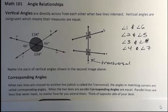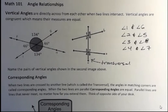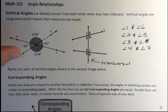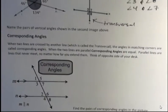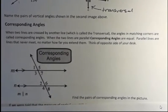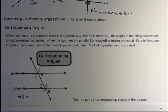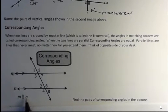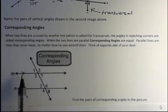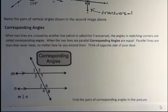Parallel lines are lines that never meet no matter how far you extend them, like the opposite sides of your desk. Looking at this picture, it says M is parallel to N, which tells us the two lines are parallel. Do you see the arrows drawn on top of the lines? That's another way to show parallel lines.